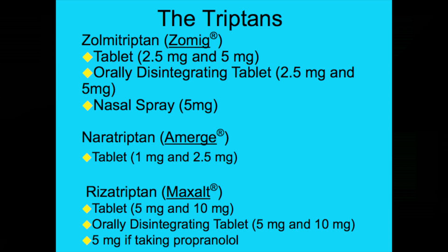Moving on to the other six triptans: first, zolmitriptan, marketed as Zomig, in 2.5 and 5 mg tablets and an orally disintegrating tablet in the same dosages, plus a nasal spray version. The orally disintegrating tablet dissolves in the mouth, but the medicine still has to be swallowed — it's not transmucosally absorbed under the tongue. Then there's naratriptan, marketed as Amerge, in 1 and 2.5 mg tablets. It has a longer half-life of about 12 hours and has been used in mini-prophylaxis schemes for menstrual periods, with data to support that approach.